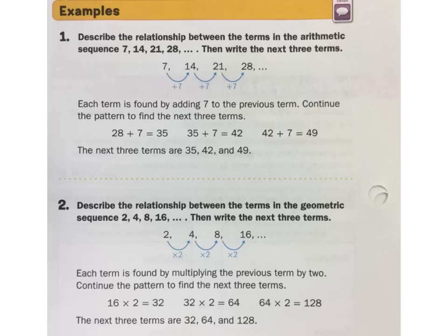So let's think about this. Describe the relationship between the terms in the arithmetic sequence. This is an arithmetic sequence because you're adding the same number to each one. You have 7 to 14 to 21 to 28. Every time you go to the next number, you're adding 7. So it is an arithmetic sequence where you add 7. If you want to get the next three terms, you're just going to add 7. So it would be 35, and then it would be 42, add 7 to that would be 49. So the next three terms would be those. That's an arithmetic sequence.